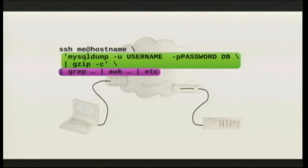It probably wouldn't be useful to grep the output of a gzip file, but I could pipe it to zcat or zgrep if I'm looking for something. The point is — it can be anything. It doesn't need to be textual data. So that's handy. It's kind of a tunnel in that you're extending your pipes across the network through an encrypted connection.